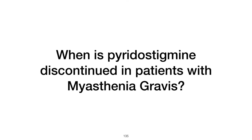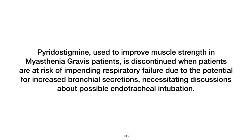When is pyridostigmine discontinued in patients with myasthenia gravis? Pyridostigmine, used to improve muscle strength in myasthenia gravis patients, is discontinued when patients are at risk of impending respiratory failure due to the potential for increased bronchial secretions, necessitating discussions about possible endotracheal intubation.